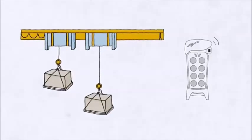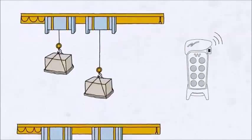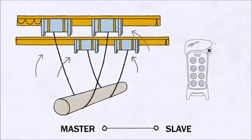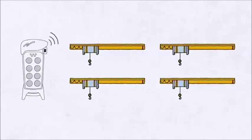Several trolleys on the same bridge independently or together. Two different bridges in a master-slave setup, even with two hoists on each bridge. Or up to four different cranes independently.